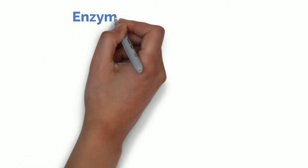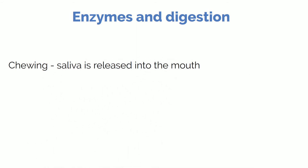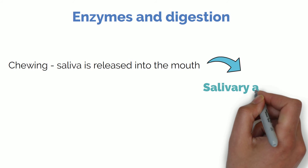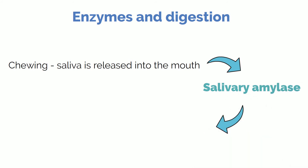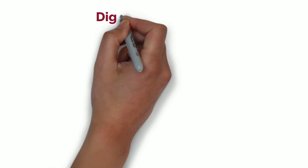Now let's talk about the relationship between enzymes and the way we digest food. Enzymes are intrinsically involved in the digestive process from the moment you start chewing. When chewing starts, saliva is released to help break down food and deliver enzymes — salivary amylase is the enzyme involved at this stage, essential in the breakdown of starch and glycogen, the stored versions of glucose. More enzymes are released when food reaches the stomach and again when it reaches the small intestine. No enzymes are secreted in the large intestine.